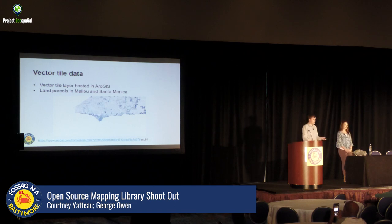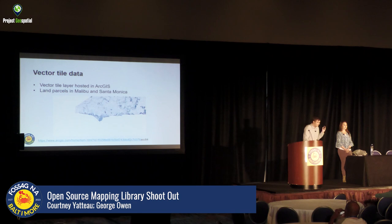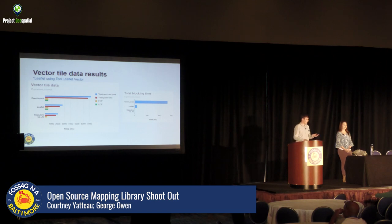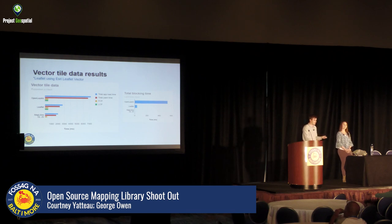Next we're looking at a standard vector tile dataset — a hosted feature layer rendered as vector tiles showing land parcels in Malibu and Santa Monica with about 200,000 unique parcels. MapLibre wins significantly here. OpenLayers takes almost seven seconds to render this data, and applying data-driven styling makes it even longer. That's also reflected in total blocking time — OpenLayers is just over 600 milliseconds, which is in the range where you should reconsider. MapLibre has a blocking time of about 0.4 milliseconds, showing it's really optimized with WebGL for vector tiles.